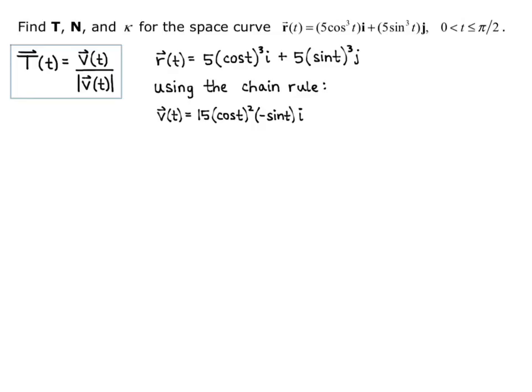15 cosine squared of t times negative sine of t i, plus 15 sine squared of t times cosine of t j. So that's using the chain rule on each component. There's my velocity.